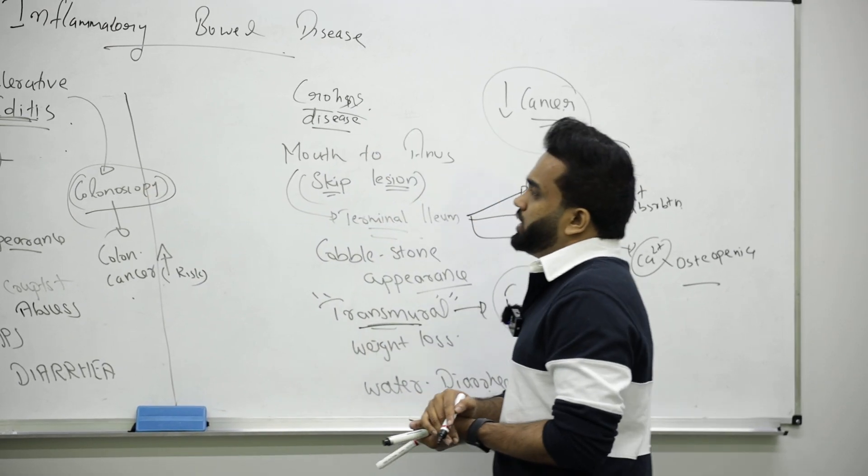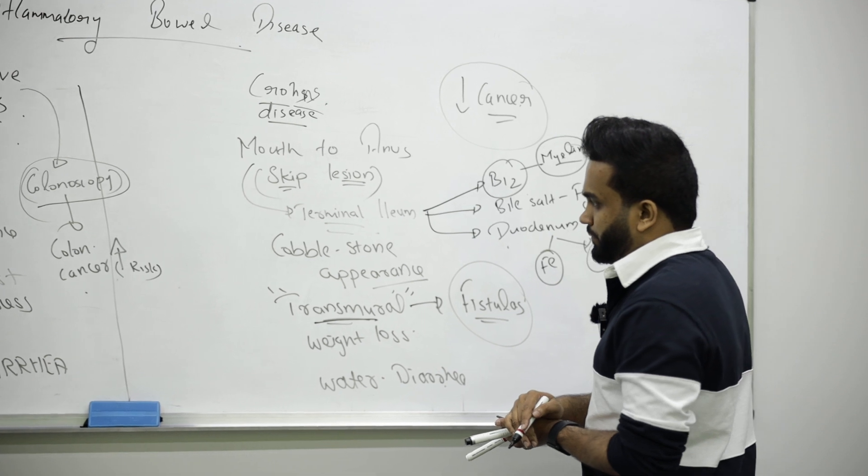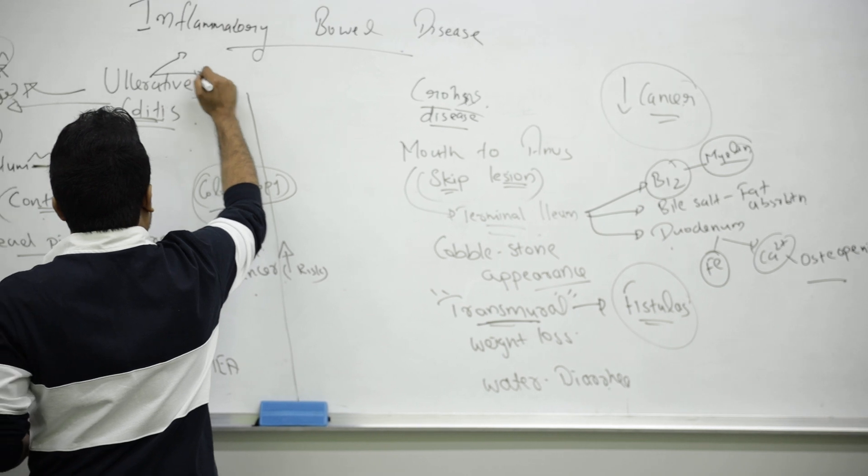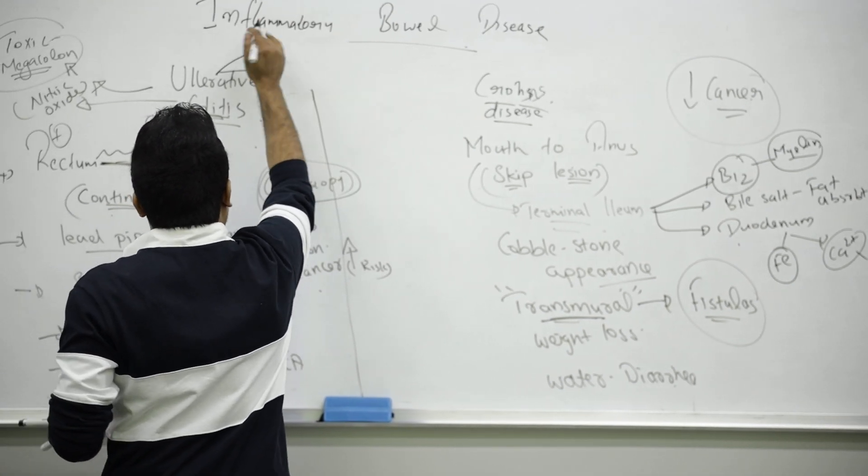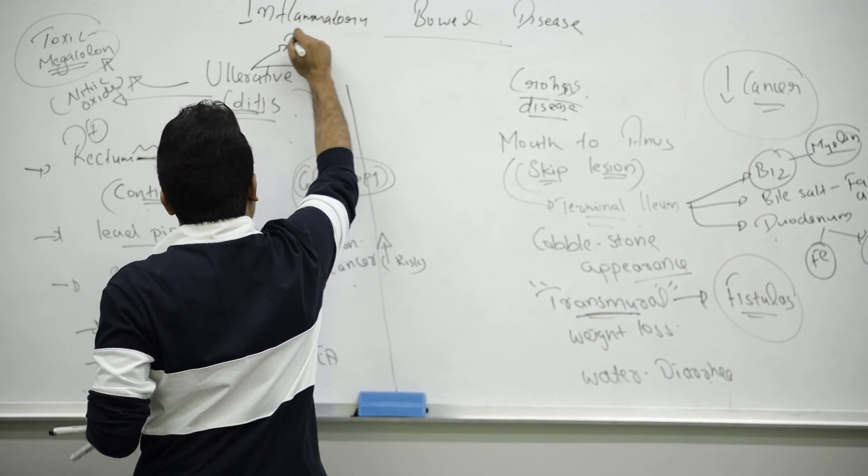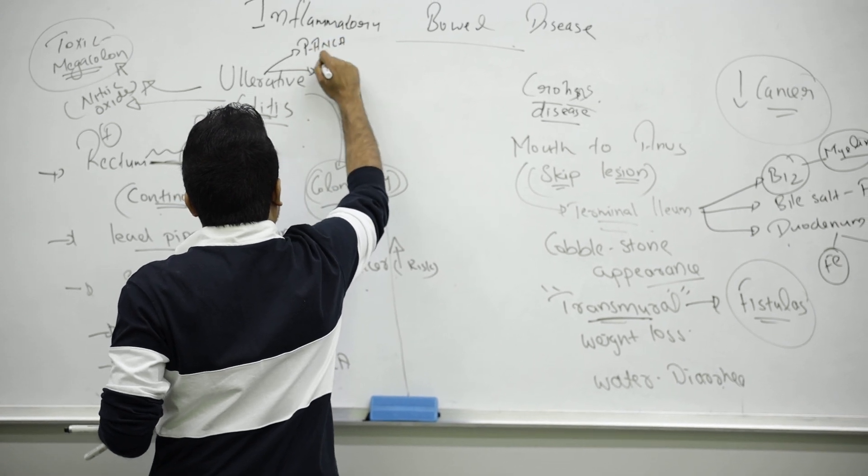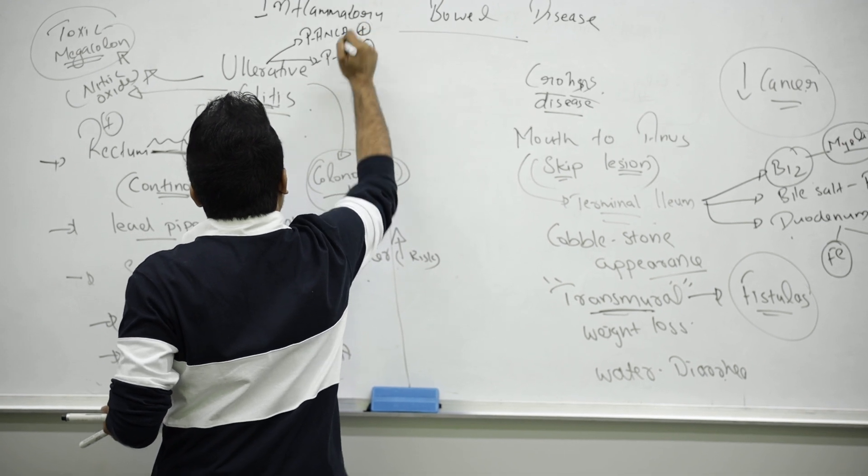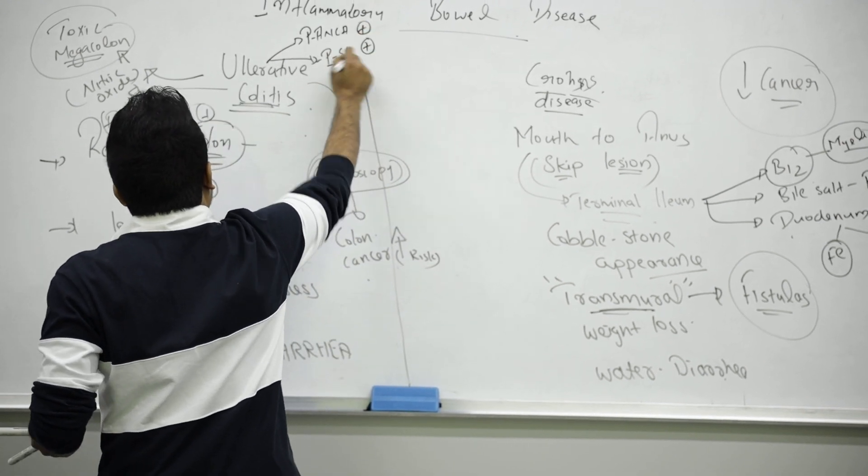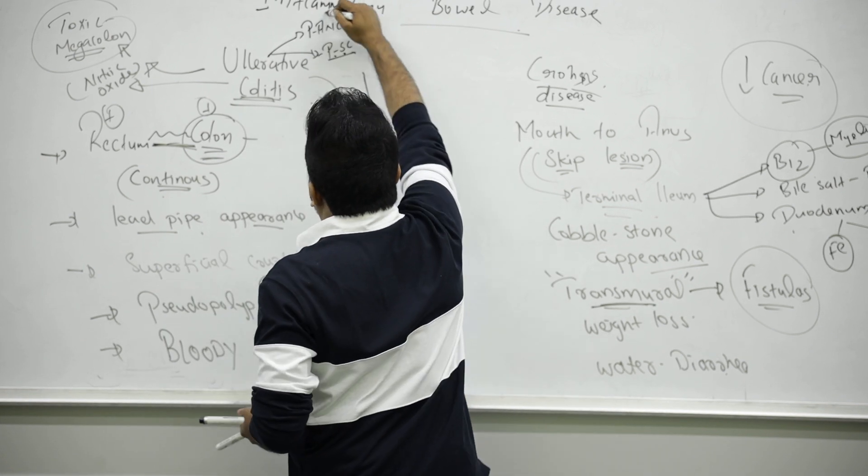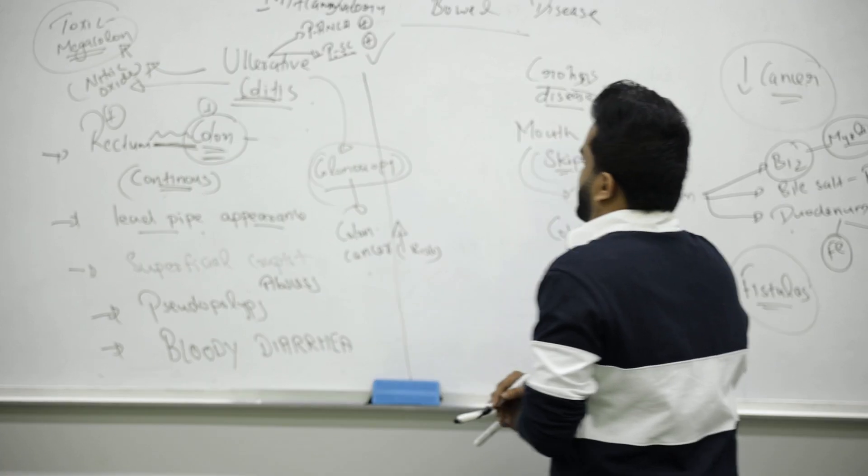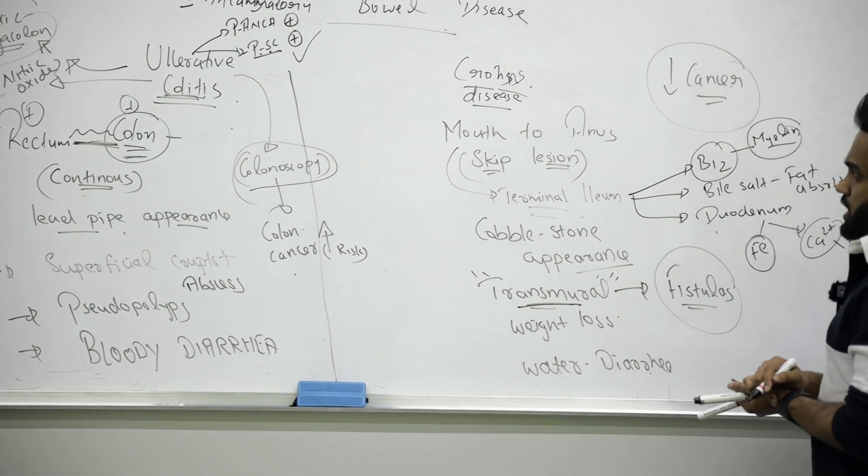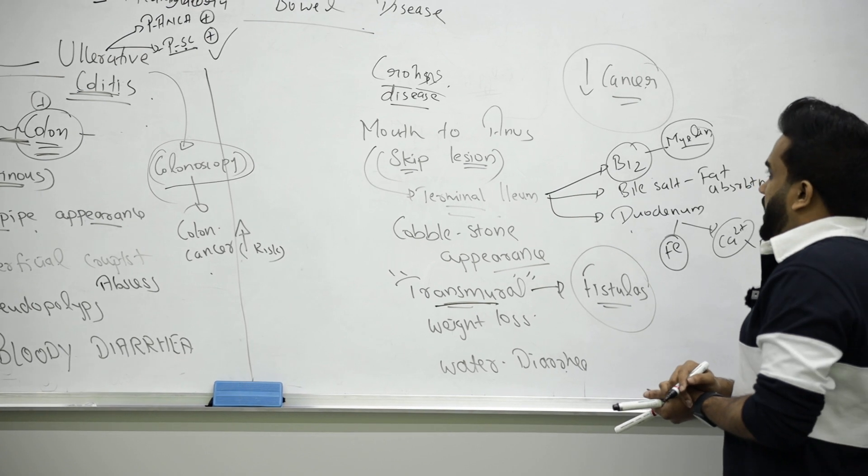Very important association for ulcerative colitis: extra-intestinal manifestation is primary sclerosing cholangitis. They are positive for P-ANCA. PSC positive, this antibody - think about ulcerative colitis mainly associated. These are the main differences between ulcerative colitis and Crohn's disease.